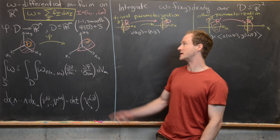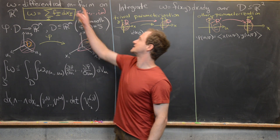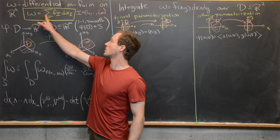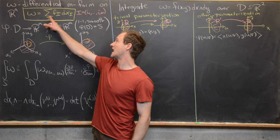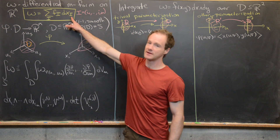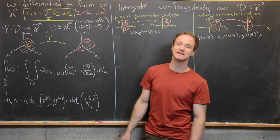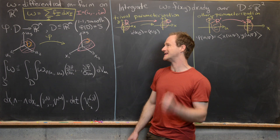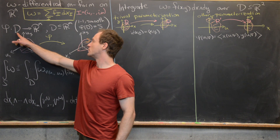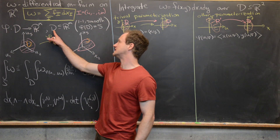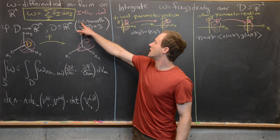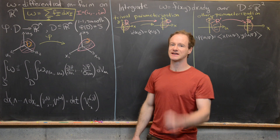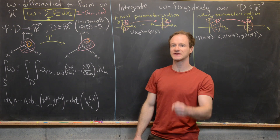Let's recall some background information. We have omega, a differential M-form on Rn, which can be written as a sum over multi-indices I of F sub I times dX_I, where I is an increasing sequence I_1 up to I_M with values between 1 and N. We also have phi, which goes from D to Rn, where D is a subset of Rm. It is one-to-one and smooth, and the image of D is S — parametrizing an M-dimensional hypersurface in Rn.